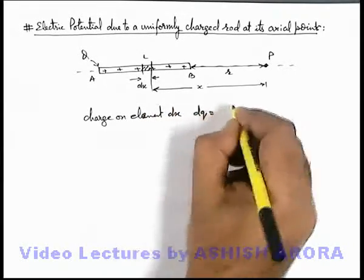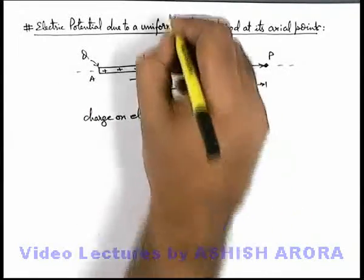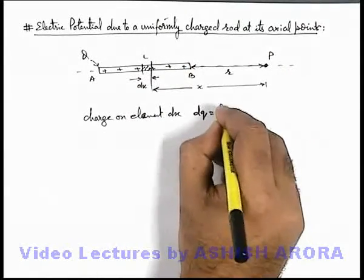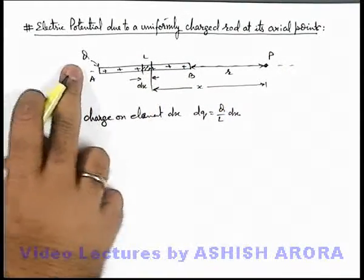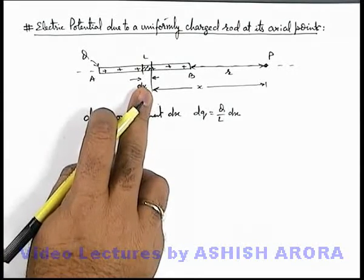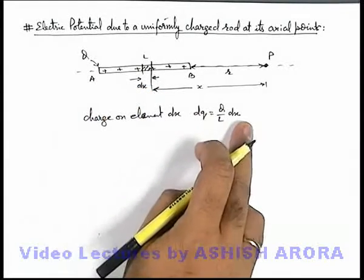As the charge is uniformly distributed, we can write it as q by l dx. On length l if the charge is q, then on the element of length dx it can be given as q by l dx.